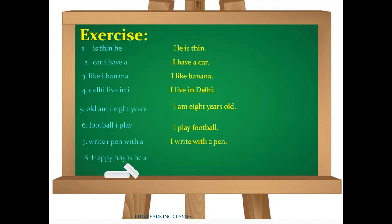Eight is 'happy boy is he a.' The correct form of the sentence is 'He is a happy boy.' Here is some short learning about sentences. In the next class, we will learn about the types of sentences. Thank you.